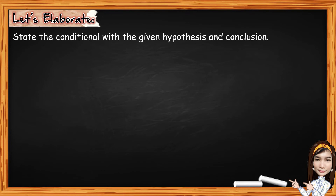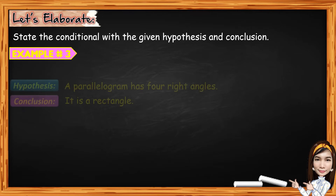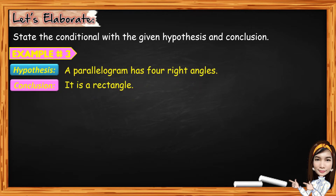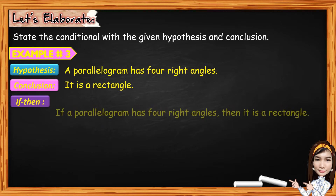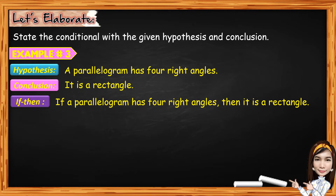This time, we are going to state the conditional with a given hypothesis and conclusion. For example number 3, given the hypothesis: a parallelogram has four right angles, and for the conclusion: it is a rectangle. So we are going to state it in the conditional. The if-then form is: if a parallelogram has four right angles, then it is a rectangle.